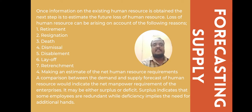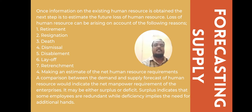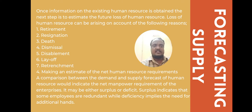Fourth step, making an estimate of the net human resource requirement — a comparison between the demand and supply forecast of human resources indicates the net manpower requirement of the enterprise. It may reflect either a surplus, indicating some employees are redundant, or a deficiency, implying the need for additional hands.